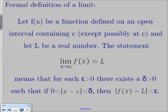The formal definition is now on your screen. It says: let f of x be a function defined on an open interval containing c, except possibly at c, and let l be a real number. Then the statement 'the limit as x approaches c of f of x equals l' means that for each epsilon greater than 0, there exists a delta greater than 0 such that if the absolute value of x minus c is between 0 and delta, then the absolute value of f of x minus l is less than epsilon.